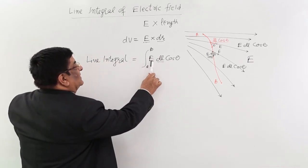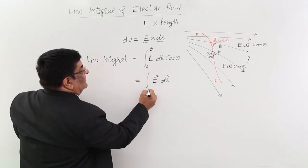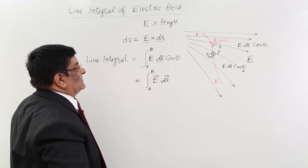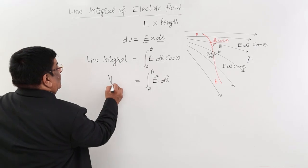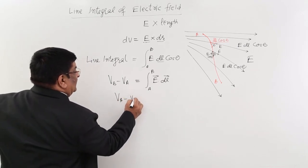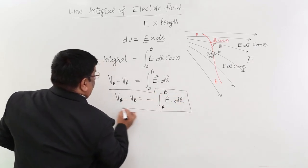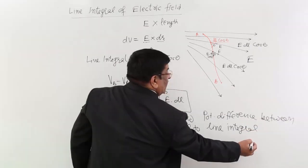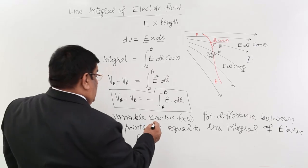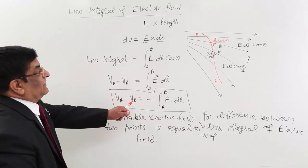The line integral of electric field is the integral of E dl cos θ, or E dot dl, from A to B. This equals the potential difference — specifically V_B minus V_A, since the final point is B and initial is A. If you want V_A minus V_B, put a negative sign: V_A minus V_B equals the negative of the line integral of electric field from A to B.